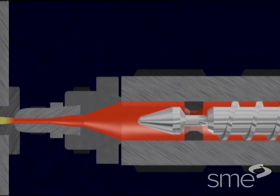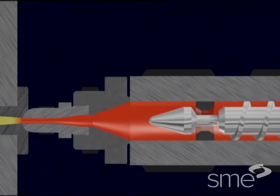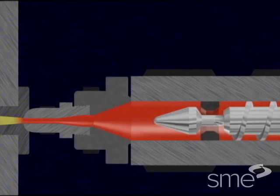When enough material for the injection shot is melted, the screw stops and pulls back to decompress the material.